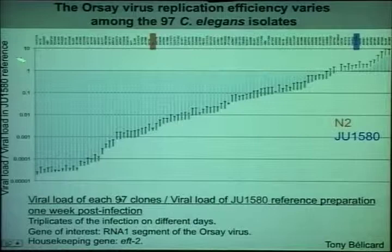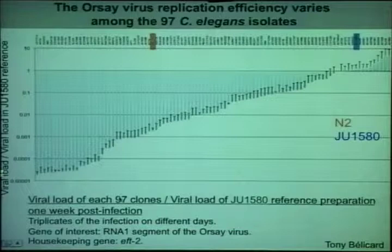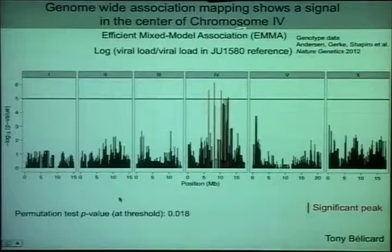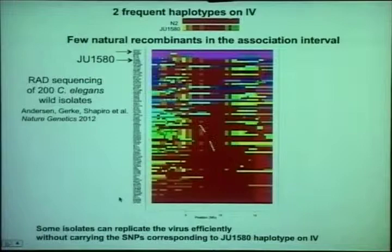On the evolution and ecology side, one interesting thing is the species specificity for each of the three viruses, and also the fact that within C. elegans there is a wide variety of sensitivity to the virus among different wild isolates. This was looked at by Tony Balla, a student in the lab, who took the 97 wild isolates defined by the paper from Eric Anderson et al. from the Kruglyak lab to do genome-wide association in C. elegans. On a log scale you can see the viral load of the Orsay virus after infection — the original sensitive strain is up here, N2 is less sensitive, but you have a whole distribution.